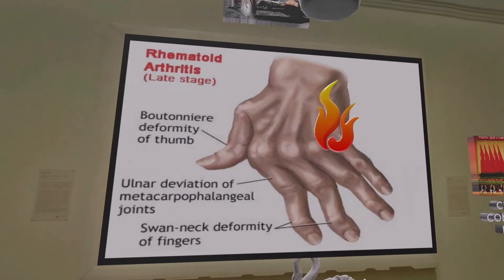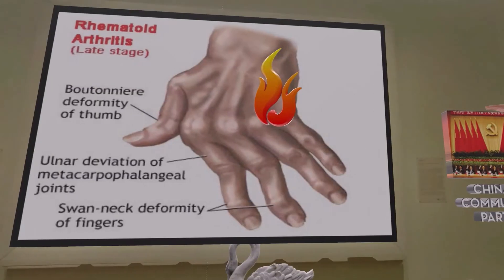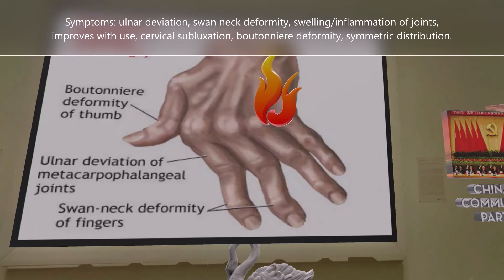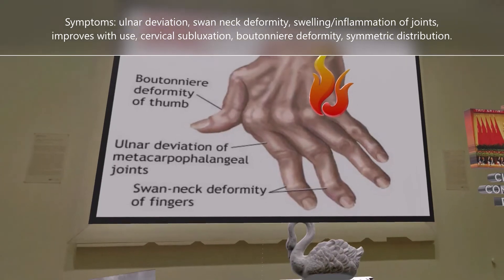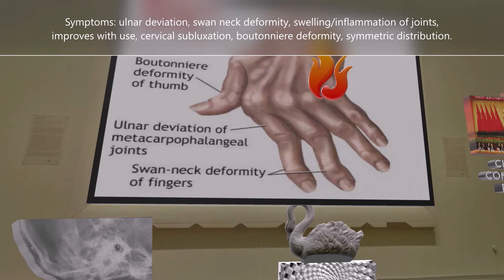Here we have a labeled painting of a patient's hand affected by chronic rheumatoid arthritis. We note ulnar deviation of the fingers at the metacarpophalangeal joints, and swan neck deformity — reminded by a swan sculpture with a long neck — which involves hyperextension of the PIP (proximal interphalangeal) joint. There's also fire by the joints reminding us of swelling and inflammation, which improves with use, separating it from osteoarthritis which improves with rest.